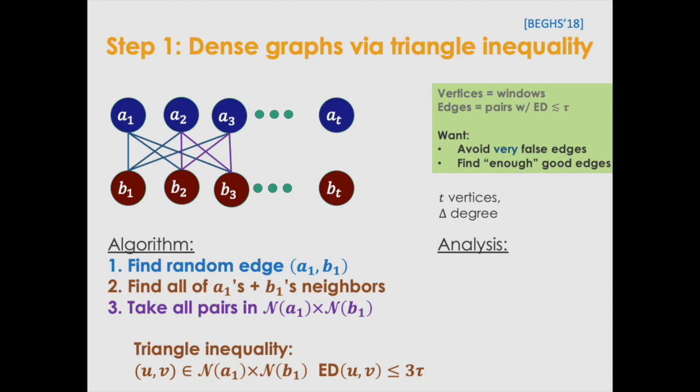Thus, because there's t delta edges total, and we use t queries to get delta squared edges, to find all the edges, we need t times delta times t divided by delta squared time, or t squared over delta time, or queries.